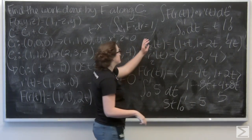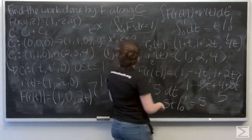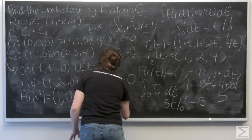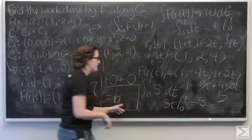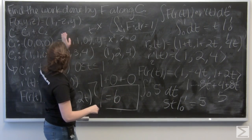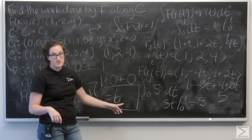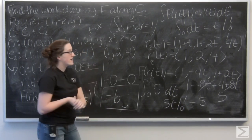And let's add that to the line integral I got for c1. And I'm going to get 6. And I could say that f is in newtons, distance is in meters, 6 joules. So, that is the work done by f along c.